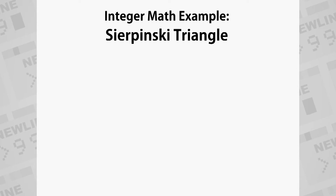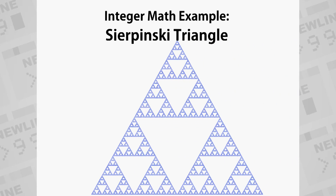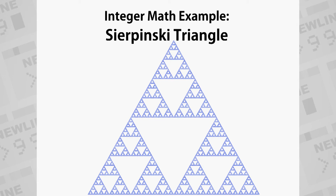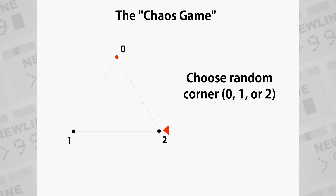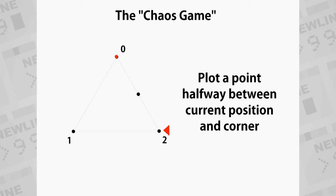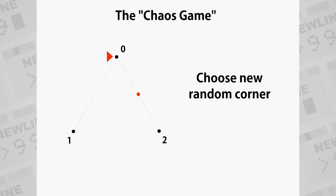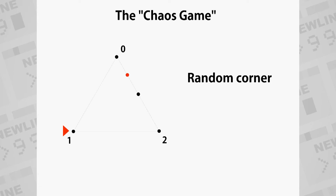As an example of using math in TI assembly, let's display a Sierpinski triangle through the use of what's called the chaos game, which uses addition, multiplication, and division. The concept is: create a triangle with corners at points 0, 1, and 2. Make point 0 your starting position. Choose a random corner — again 0, 1, or 2 — and plot a point halfway between the current position and that random corner, making that the new current position. Then choose a new random corner and plot a point halfway between the current position and that corner. Halfway point, random corner, halfway point, random corner — just keep doing that. The result is a rather remarkable image.